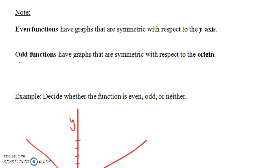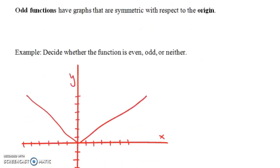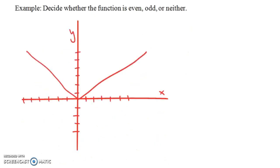And odd functions have graphs that are symmetric with respect to the origin. So let's do a couple of examples — decide whether the function is even, odd, or neither. Notice this graph is symmetric with respect to the y-axis: if we flip it around the y-axis, we get the same function again. So this is an even function.